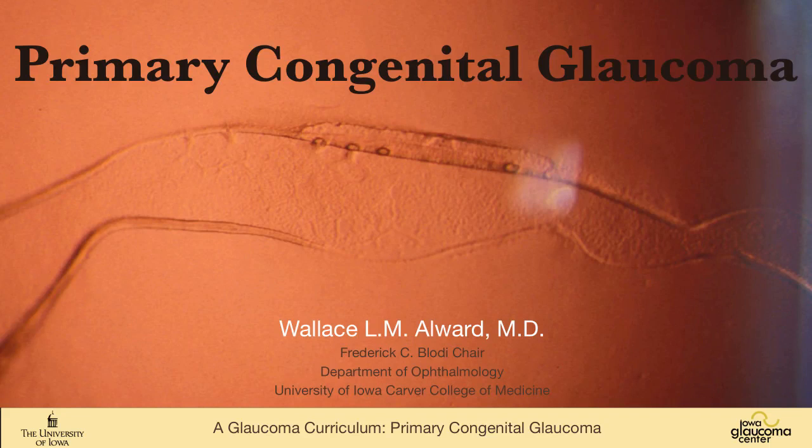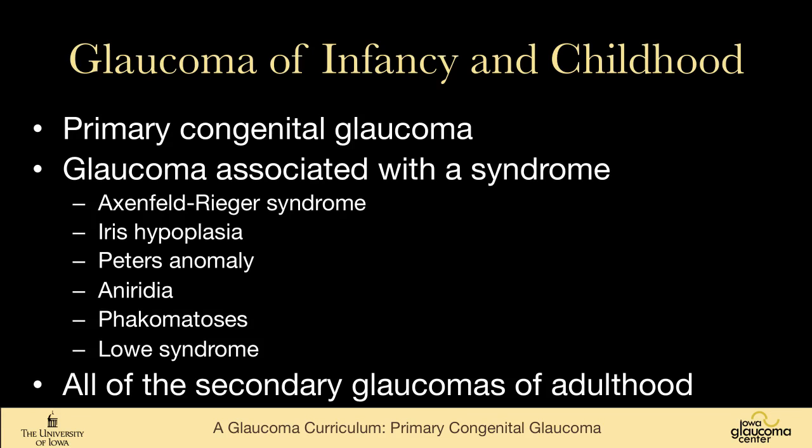We're going to talk about primary congenital glaucoma. There are lots of glaucomas that can occur in children and babies. Primary congenital glaucoma is just one of those. There are lots of syndromic glaucomas, and those are features of other talks in this series. Anything that can cause glaucoma in an adult, like neovascularization, steroids, or trauma, can also cause glaucoma in a baby. So we're going to just focus on primary congenital glaucoma.